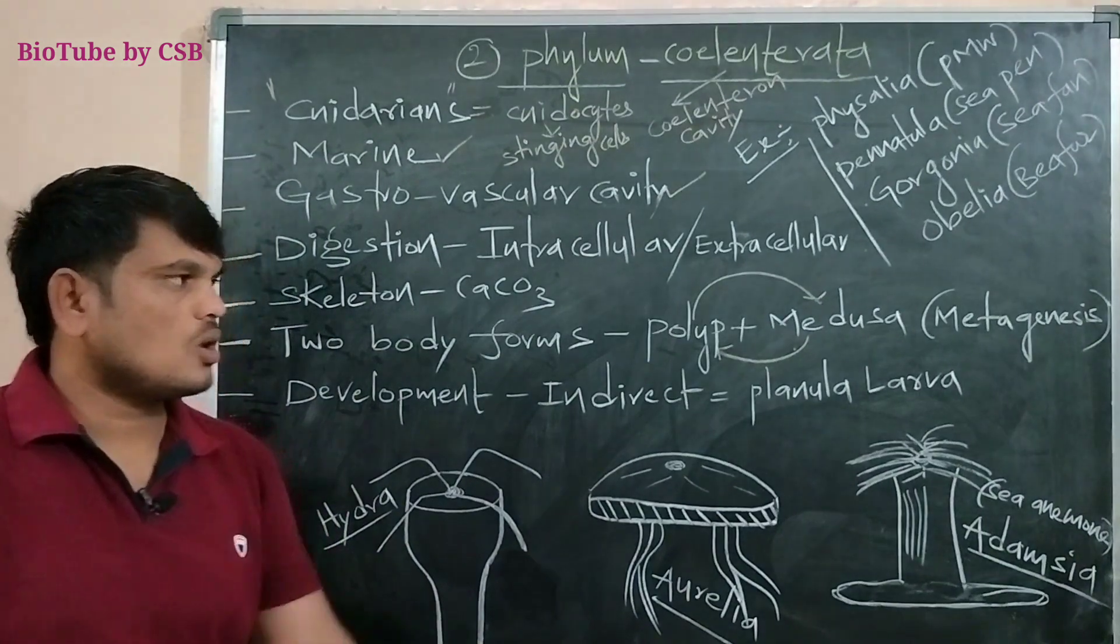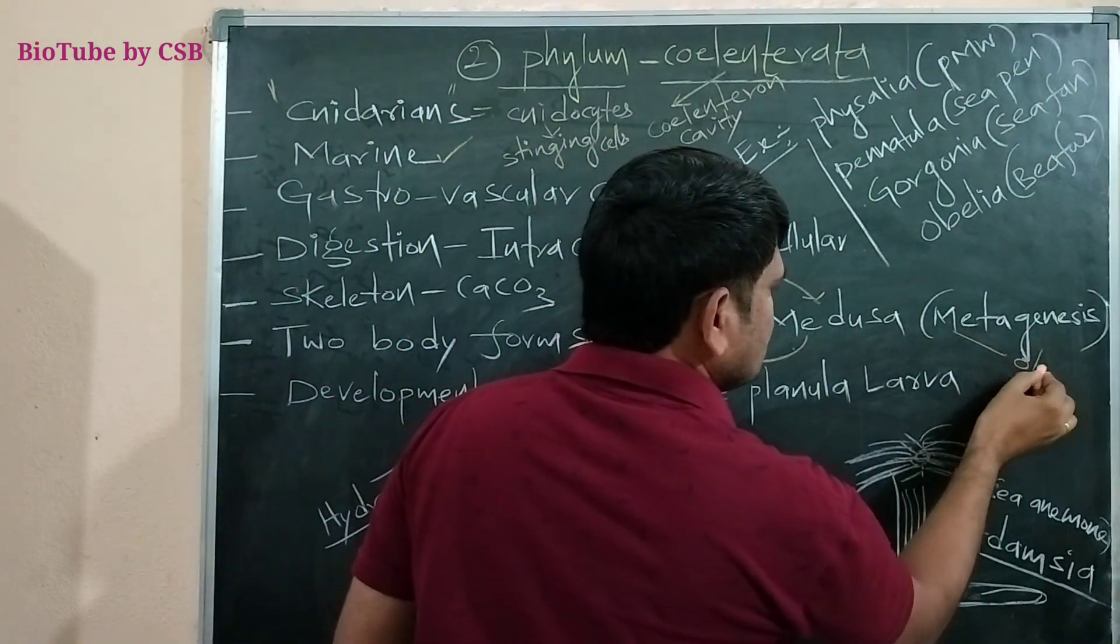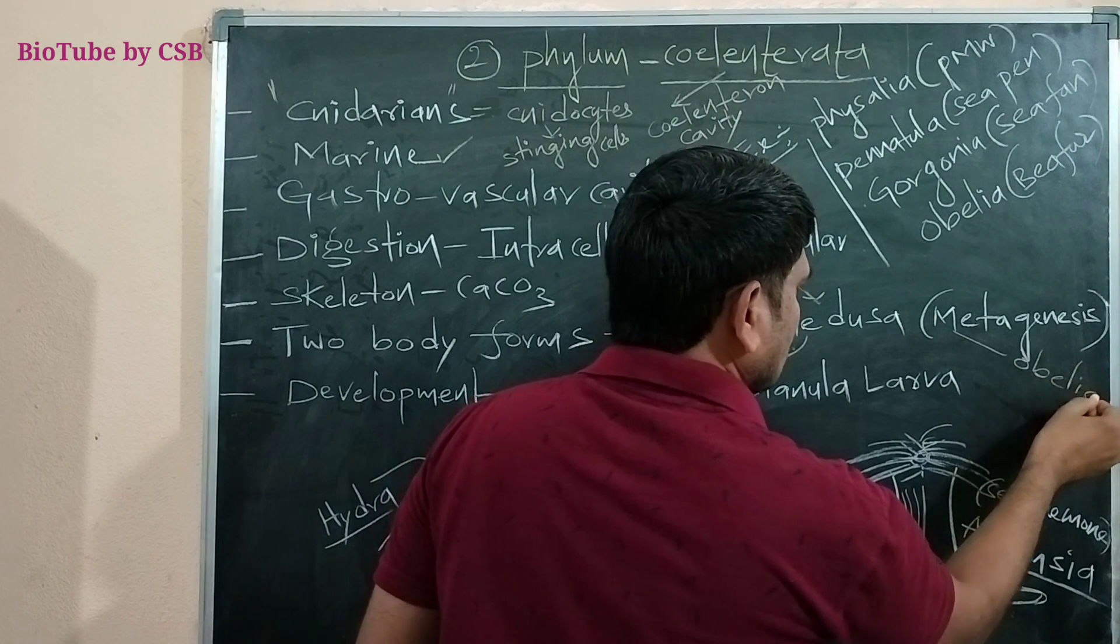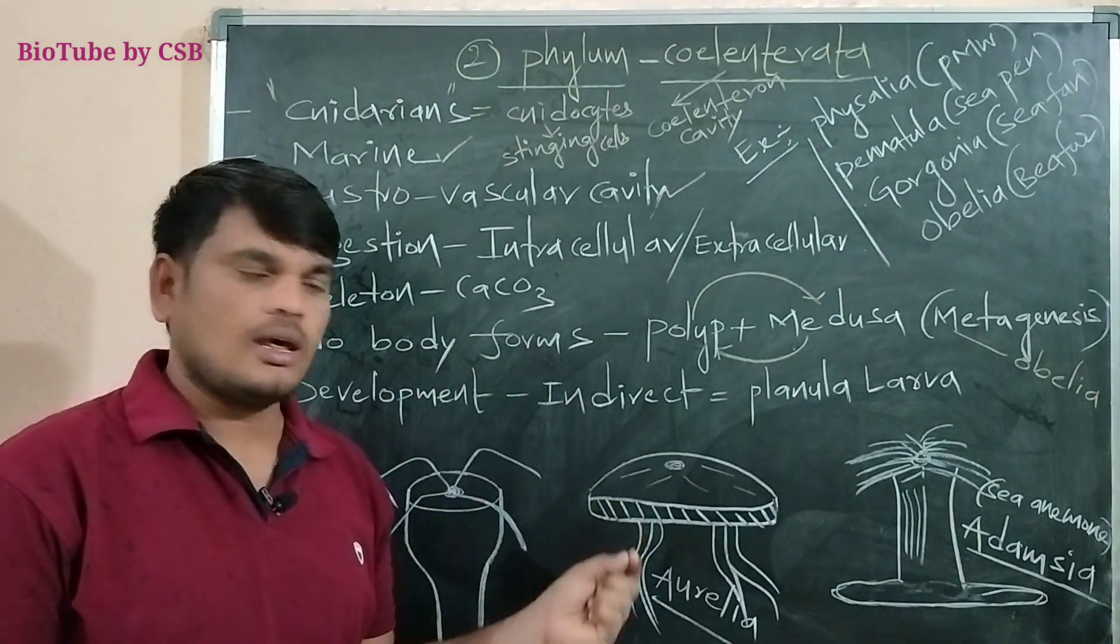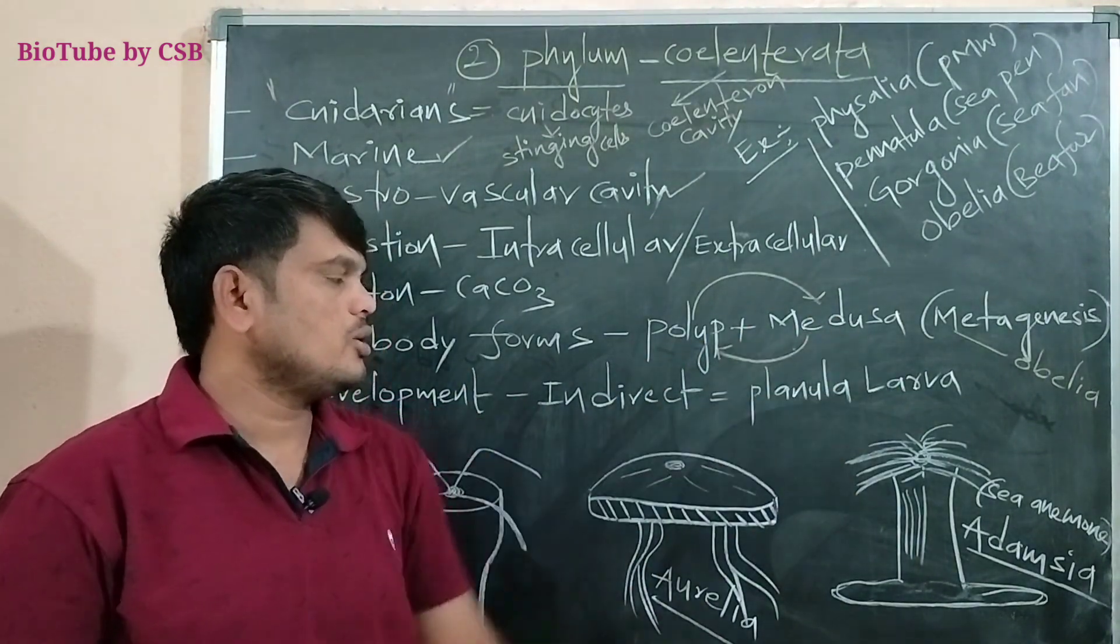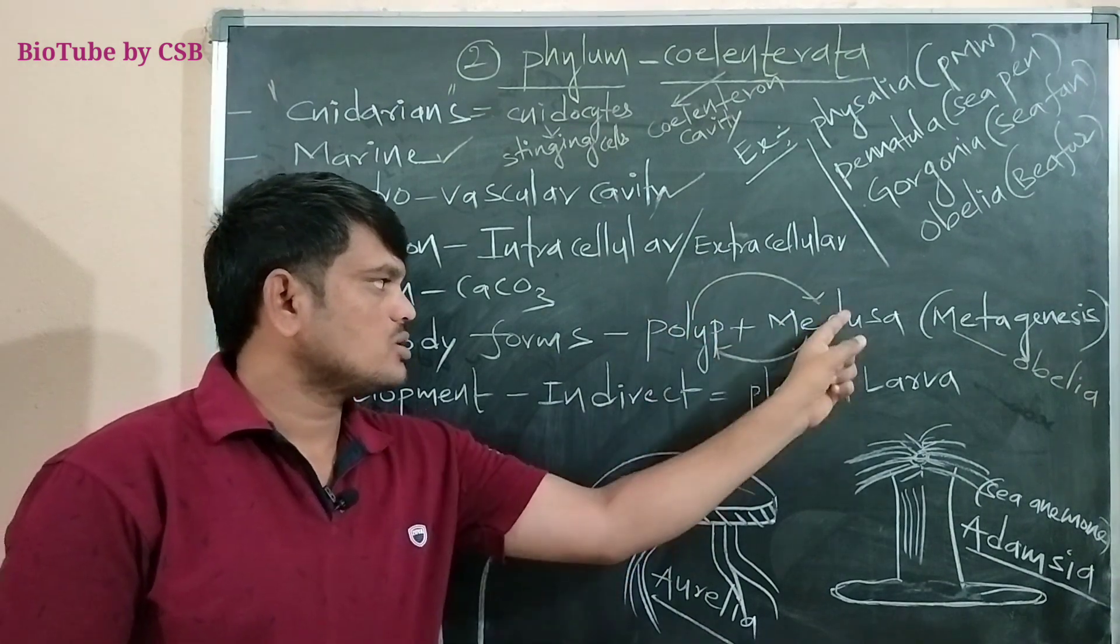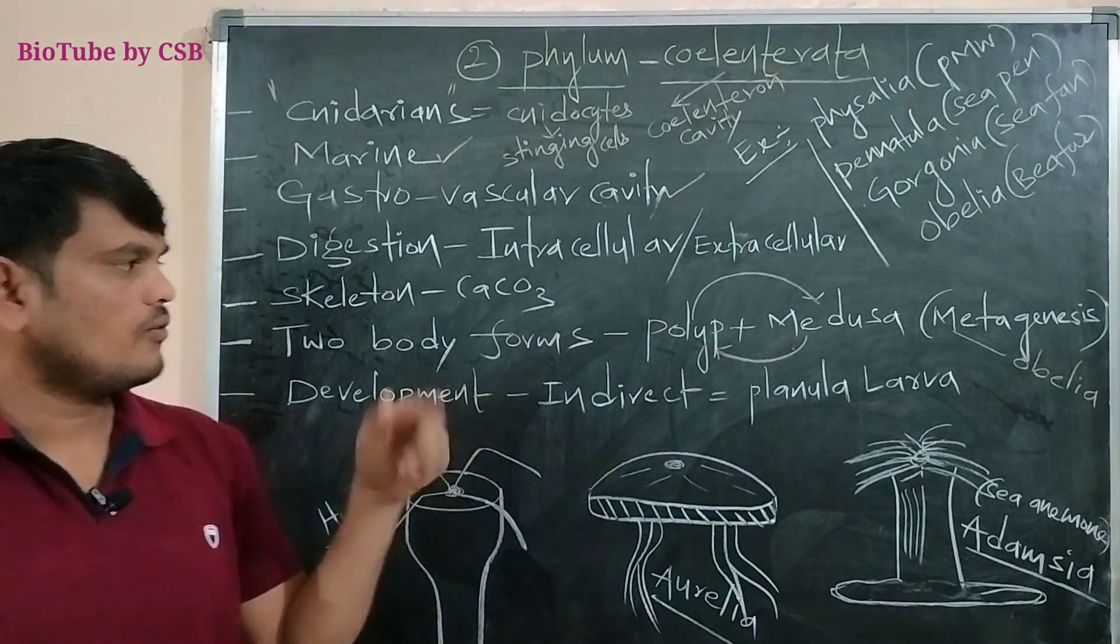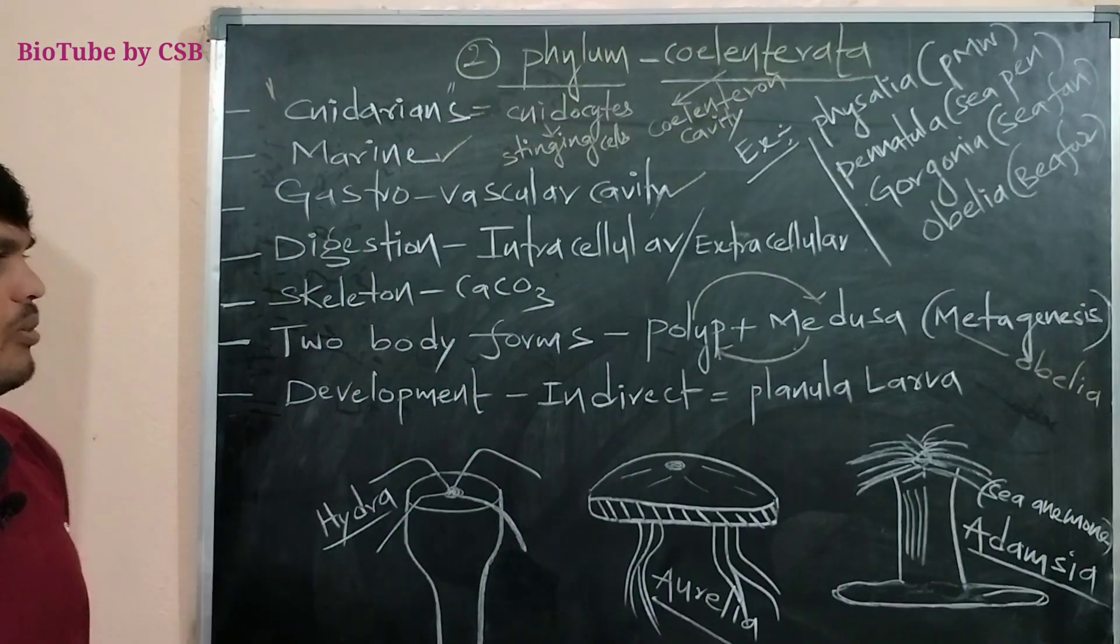Such kind of phenomenon is called metagenesis, exhibited by Obelia geniculata organism. So, two body forms are present throughout the life, Polyp and Medusa. Polyp to Medusa, Medusa to polyp. This kind of reproduction is called metagenesis, exhibited by Obelia geniculata.